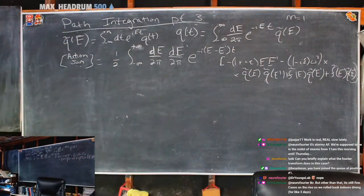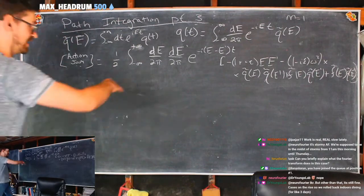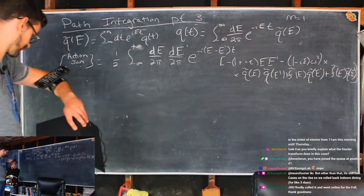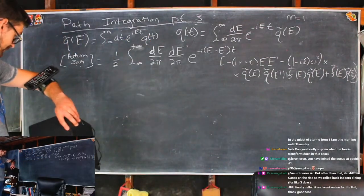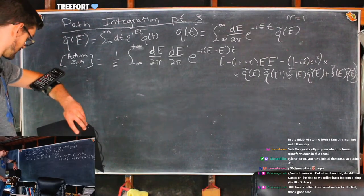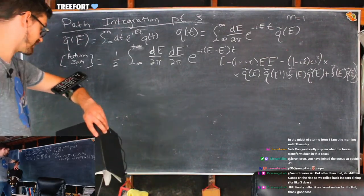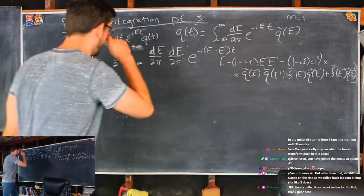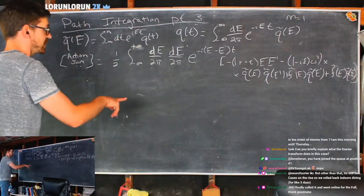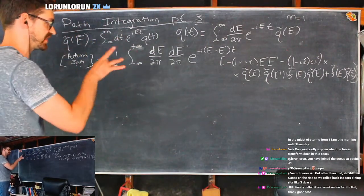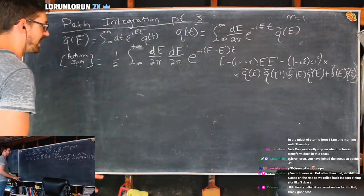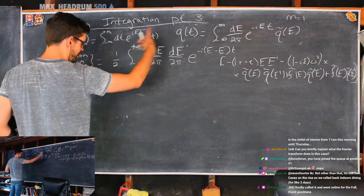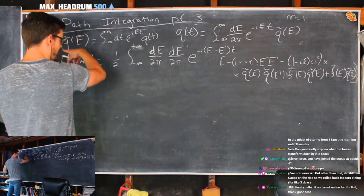You might say: we had a nice action, why did you screw it all up? The Fourier transform goes from time into energy. Something very beautiful is about to happen — just give it a step.